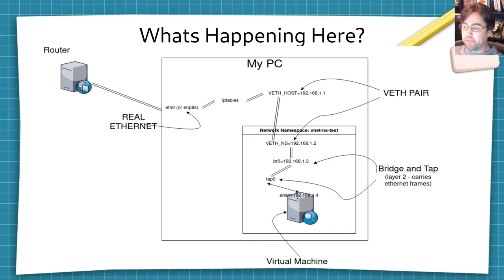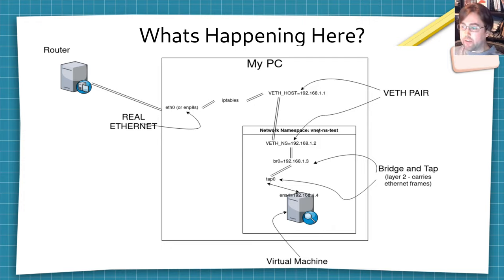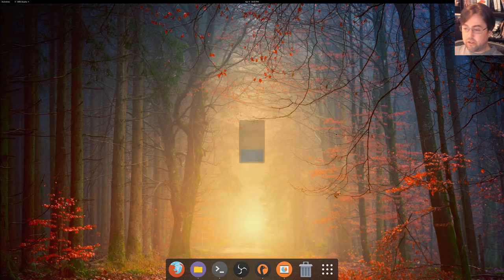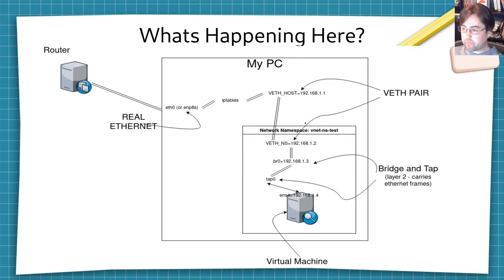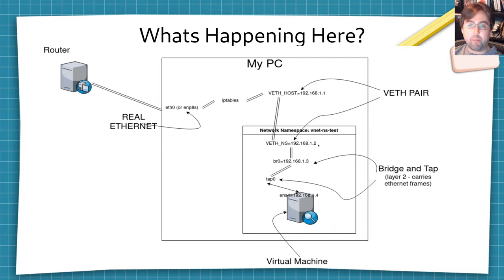In my diagram, at the bottom we've got my virtual machine with the IP address of 192.168.1.4. It's using a tap onto a bridge to get communication into the network namespace of the container. This container is called vnet-NS-test, or sometimes vnet-NS-one. I'm connecting my virtual machine using a tap on a bridge to connect to this veth-NS, which is 192.168.1.2. Now in using bridge networking, I don't actually have to give that side of the veth pair an IP address, but I have in this case.